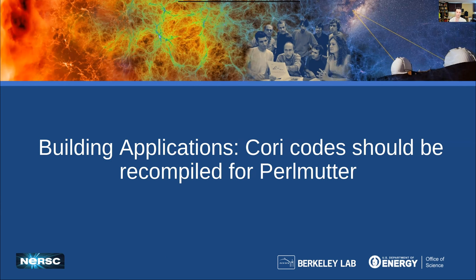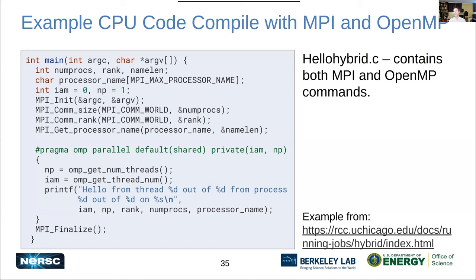To make this crystal clear: if you have a code on Cori and want to run it on Perlmutter, you should recompile it. Take your source code, move it to Perlmutter, recompile it, and then start doing your runs. I'm going to show some examples of how to compile codes on Perlmutter. My example code is a Hello World that has both MPI and OpenMP built in.